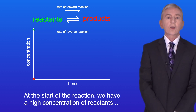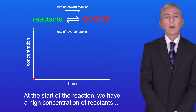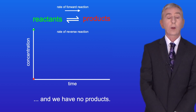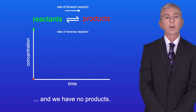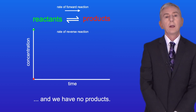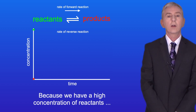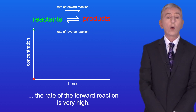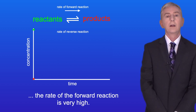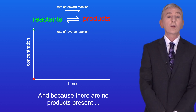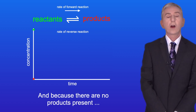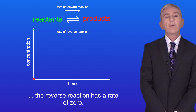At the start of the reaction, we have a high concentration of reactants and no products. Because we have a high concentration of reactants, the rate of the forward reaction is very high. And because there are no products present, the reverse reaction has a rate of zero.